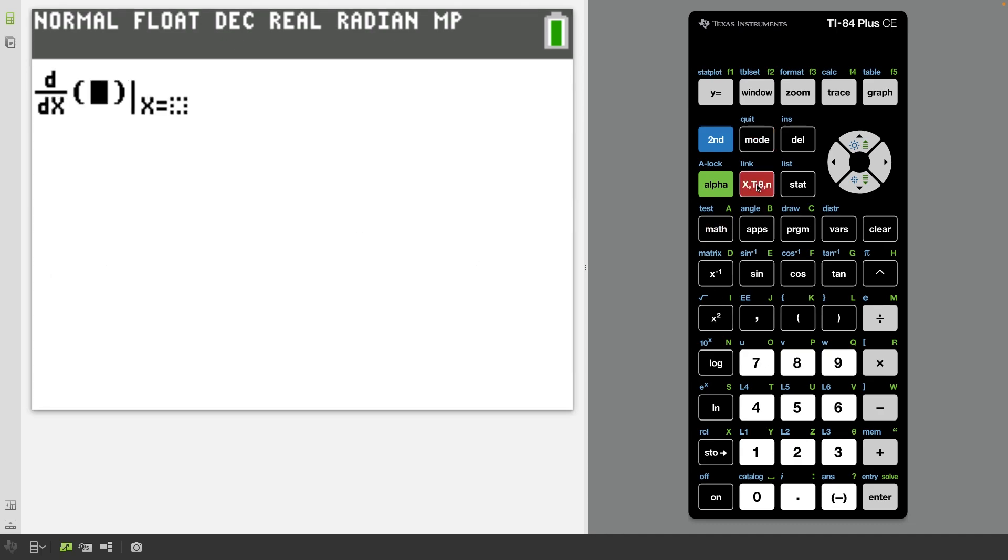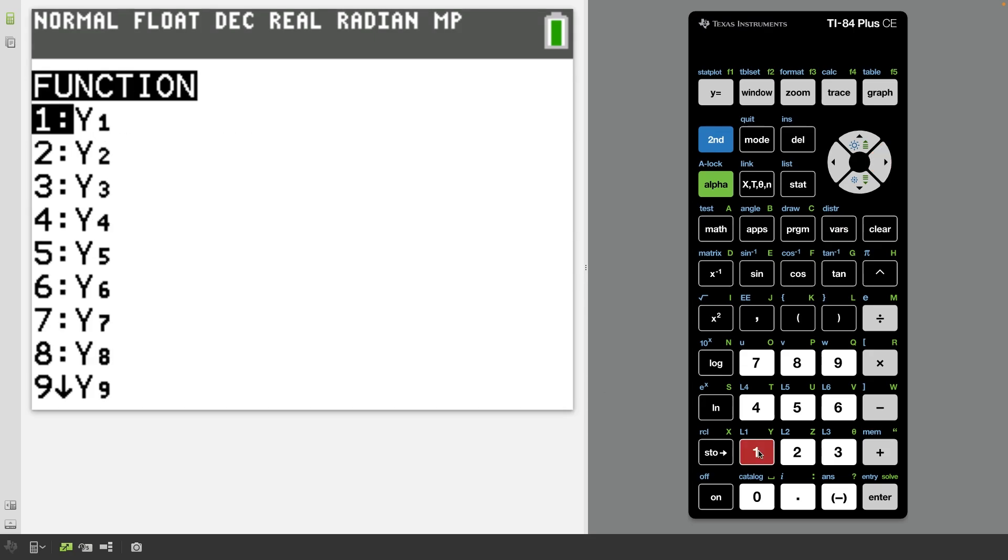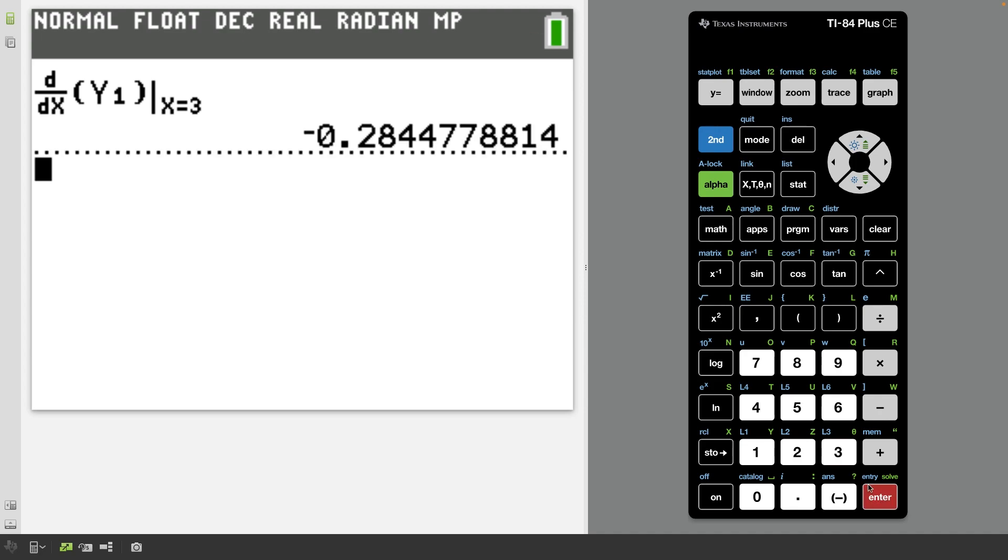And instead of retyping that whole function, we saved it in the y1 spot. We could press vars. We go to the right. We go to function number one. And we just type in y1. And now let's say I want the derivative at x equals 3. I get it all in one shot. So know how to do all of these calculator shortcuts.